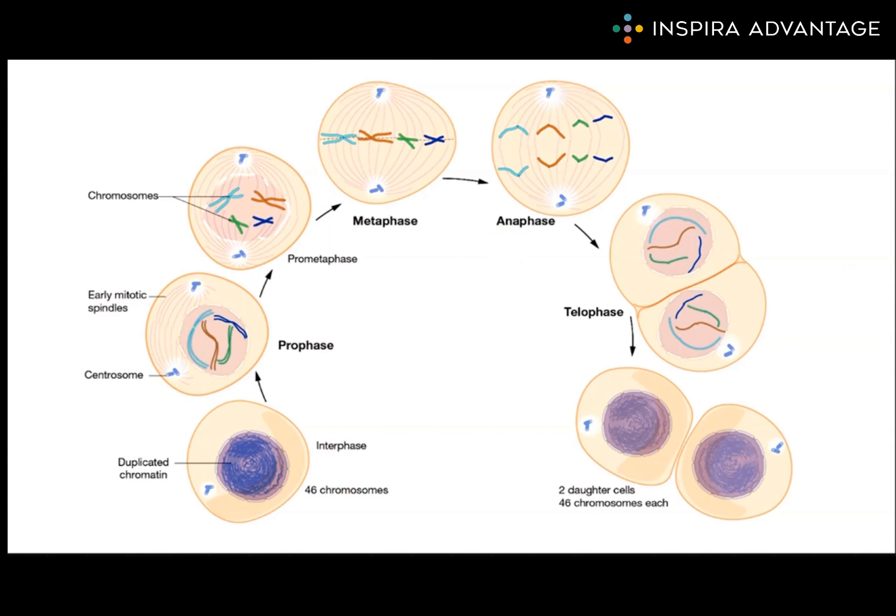Finally, in telophase, the fourth and final stage of mitosis, two new nuclei form and the cell begins to divide into two daughter cells. A new cell wall also begins to form, as seen here by the darker orange line separating the two daughter cells. The formation of the new nuclei and cell wall marks the completion of mitosis and the beginning of interphase.